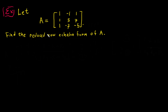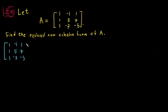Here is the 3 by 3 matrix we want to find the reduced row echelon form of A. First we have to rewrite it here: 1, minus 1, 1 — this is the first row, this is the second row, this is the third row. We know this is the first leading one.